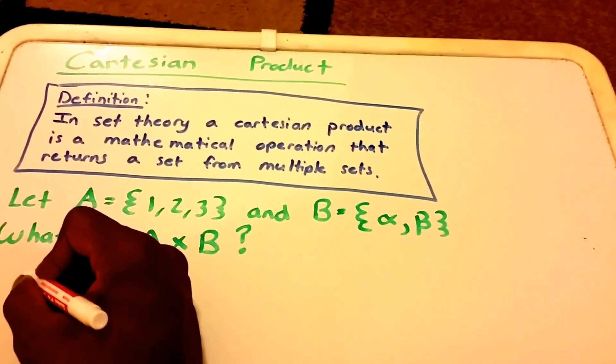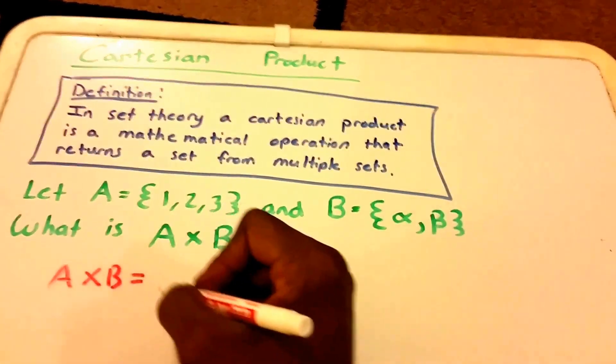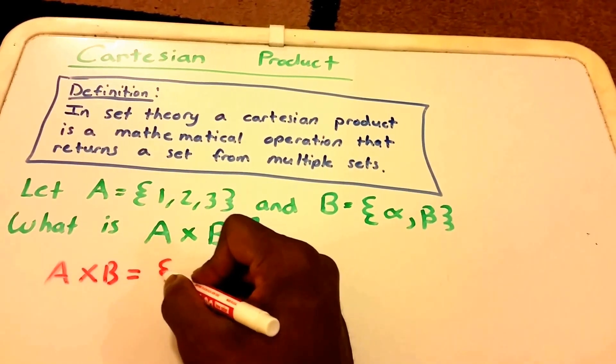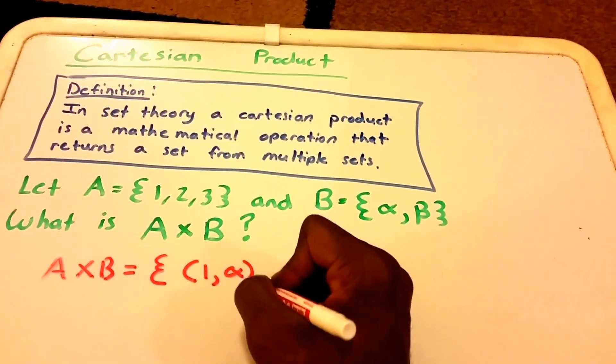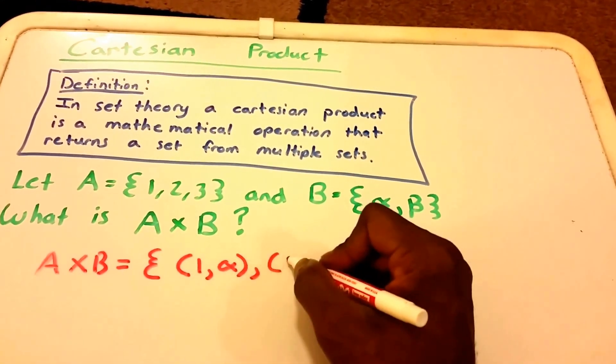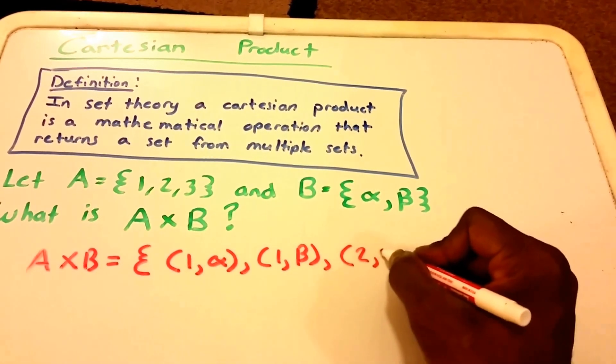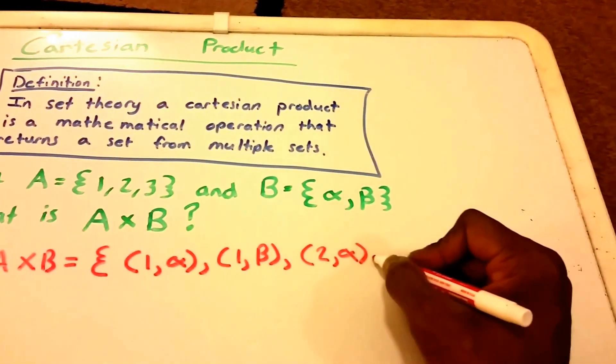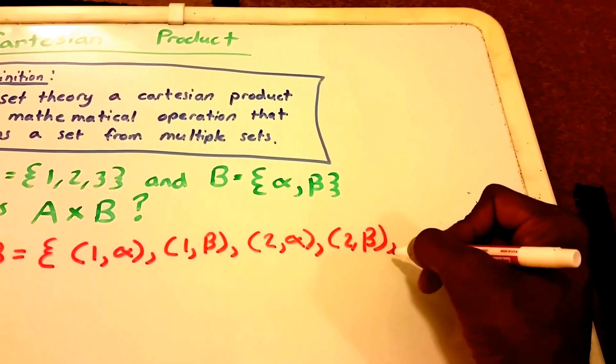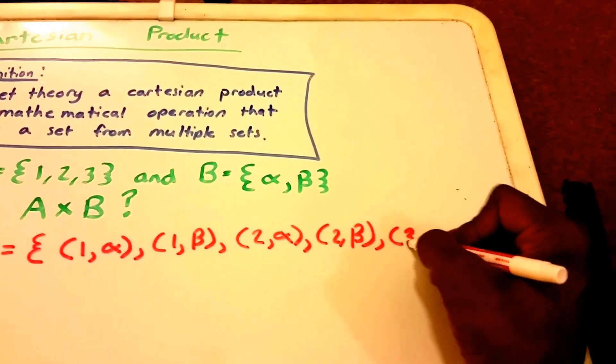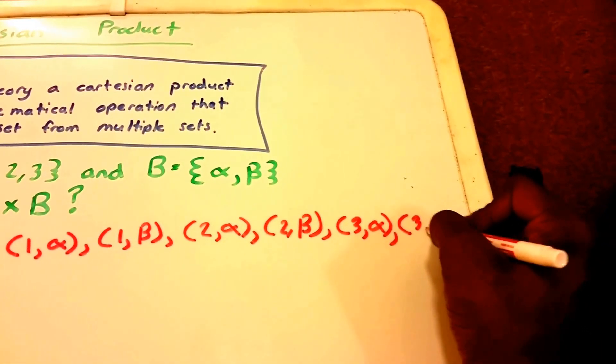Well, let's see. So the Cartesian product of A and B would be equal to the set that contains (1, alpha), (1, beta), (2, alpha), and then (2, beta), and then (3, alpha), and (3, beta).